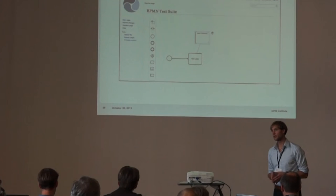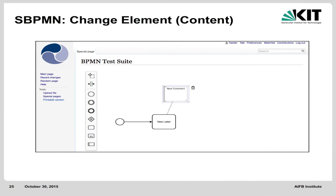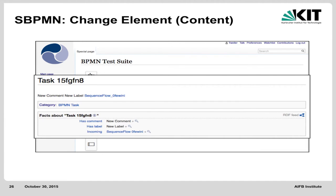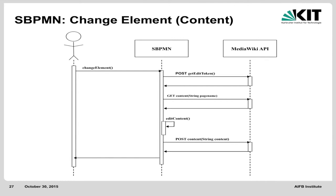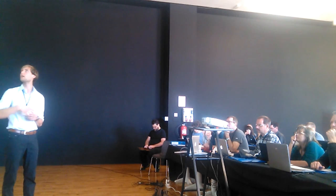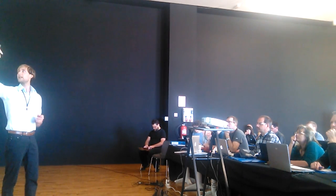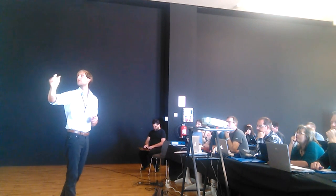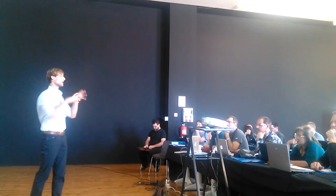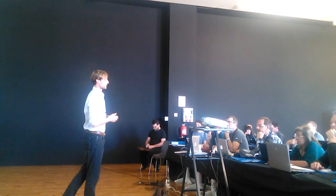You can also change the content of the page — adding comments or labels. For example, if you change comments and labels, it appears on the corresponding page of the task, gateway, or sequence flow. The system communicates with the MediaWiki API via a UML sequence diagram: we get the edit token, get the content of the page, add the new label or comment, and post it on the page.